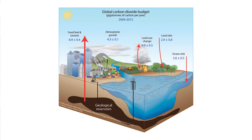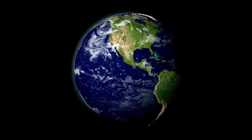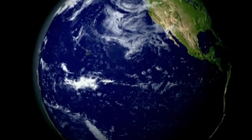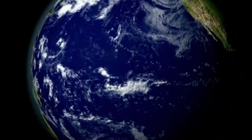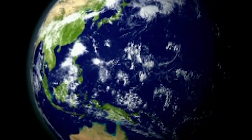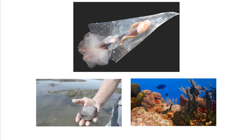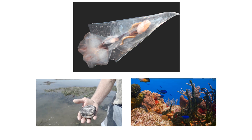The global carbon cycle moves carbon in different forms throughout the Earth's system, including the land, the deep earth, the atmosphere, and the ocean. Covering 70% of the Earth's surface, the ocean plays a vital role in the global carbon cycle, storing six to seven times more carbon than the land and atmosphere combined. Carbon occurs in many forms in the ocean — dissolved carbon dioxide supports half of the photosynthesis on our planet, and carbonate ions form the building blocks for the shells and skeletons of marine plants and animals including plankton, shellfish, and corals.